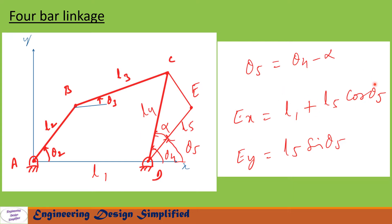By putting plus here, it will take care of the sign for 360 degrees rotation of the crank. Similarly, let us write the equation for Y position EY. EY equal to L5 sin theta5. These are pretty simple equations. In the next slide, let us see a problem.